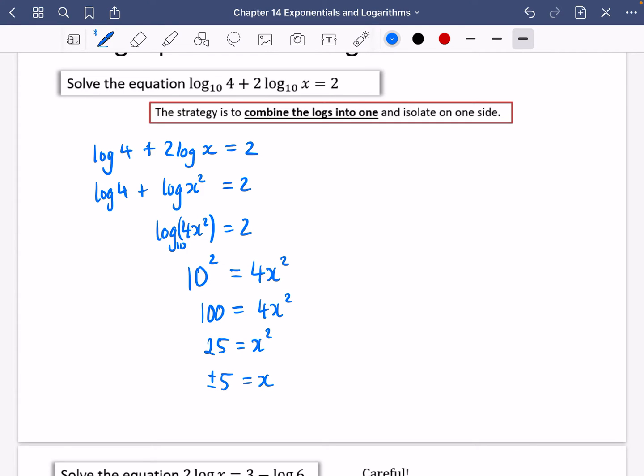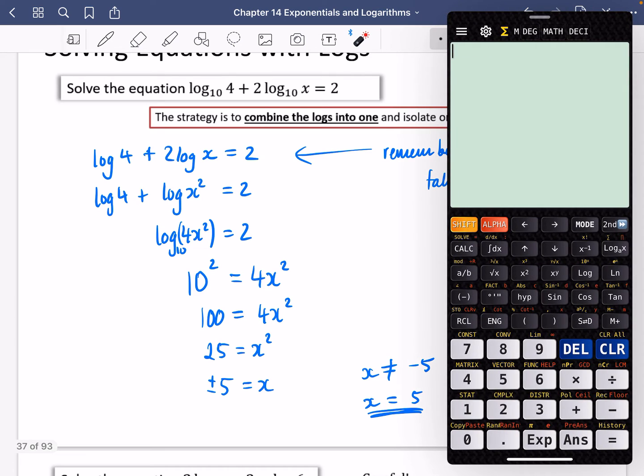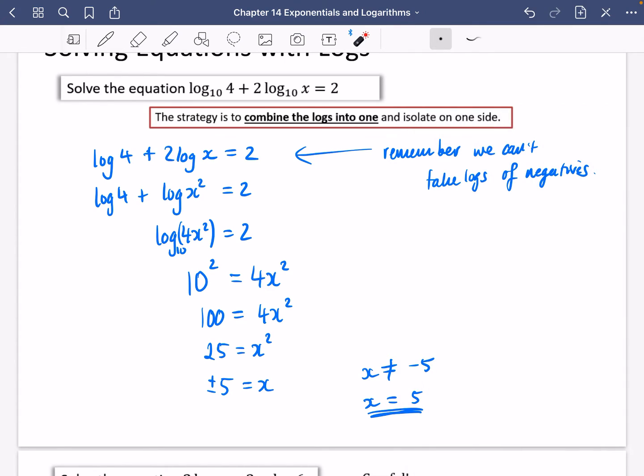Now you just need to be careful here, because at the beginning, this was our original equation. And remember, we can't take logs of negative numbers. So x cannot be equal to minus 5. The only answer in this case is that x is equal to 5. Because if x was minus 5 here, we would have been doing 2 log of minus 5, which goes into imaginary numbers. So we can't do that. So this one is not a solution. So the only solution is that x is equal to 5.